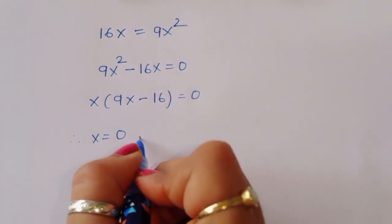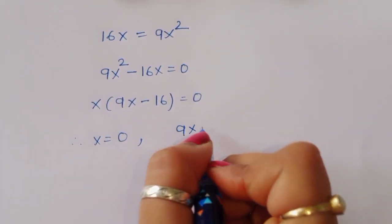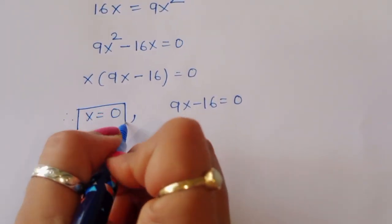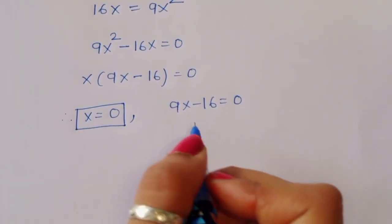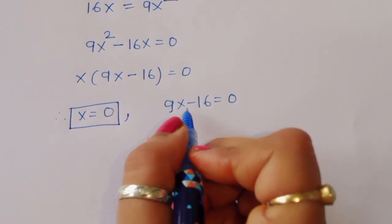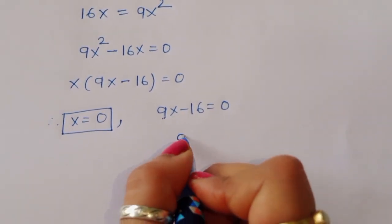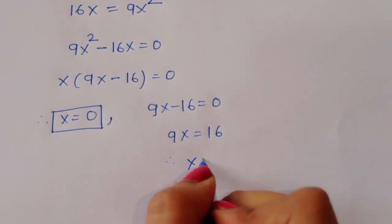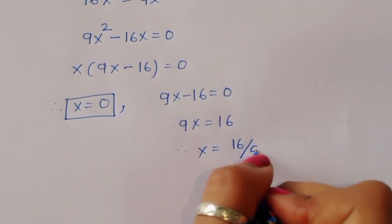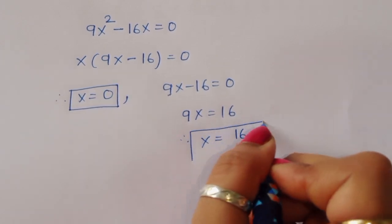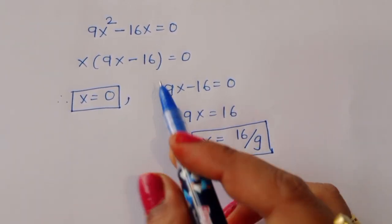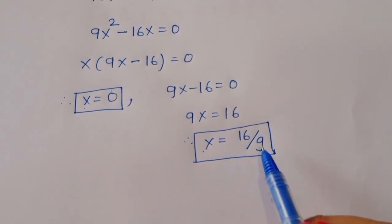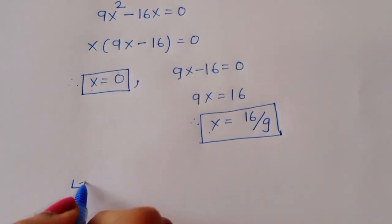Taking x common from 9x² − 16x = 0 gives x(9x − 16) = 0. So either x = 0, or 9x − 16 = 0 which gives 9x = 16, therefore x = 16/9. We got two values of x: x = 0 and x = 16/9. Now let's verify whether these are correct.